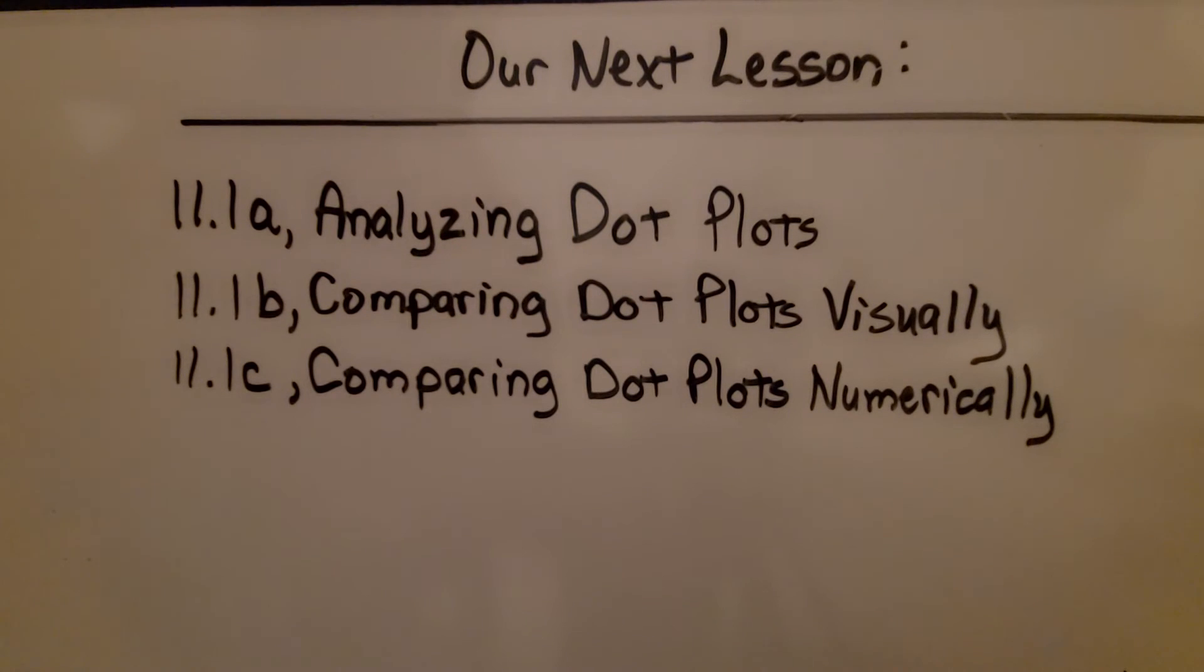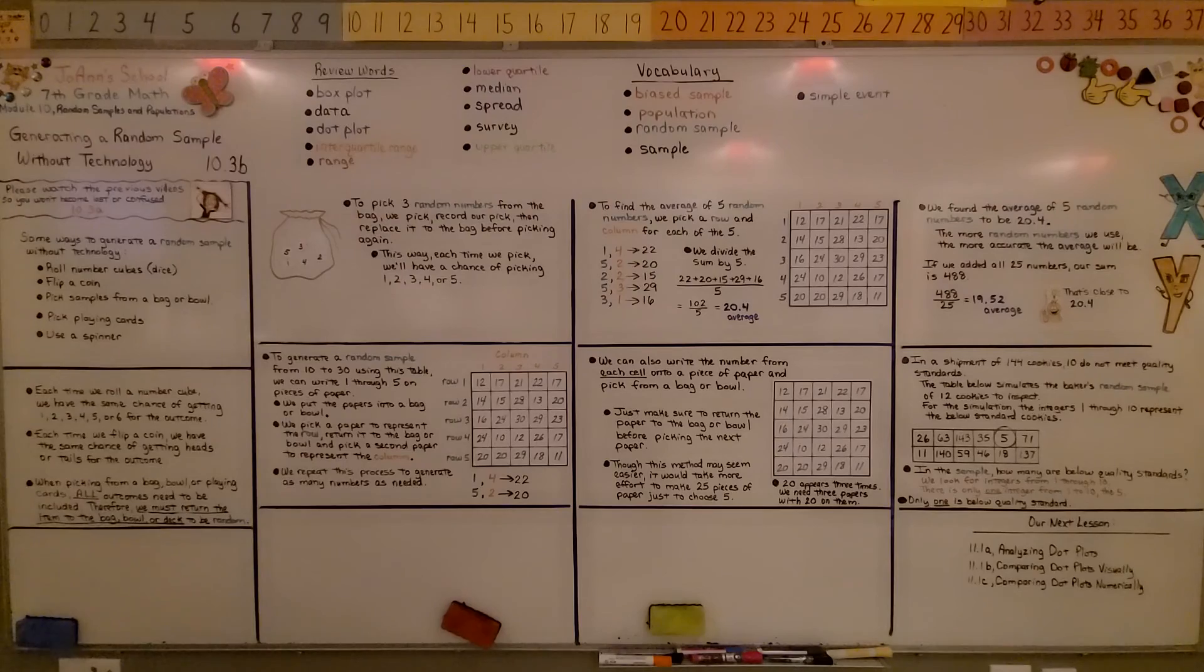We're finished with module 10, and we're moving on to module 11 now. We're going to be analyzing dot plots in 11.1a. In the previous video, 10.3a, we showed how to find a random sample with technology using a graphing calculator. And when we did that, we had the same chance of getting those numbers each time, so we could get duplicate numbers.